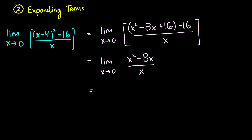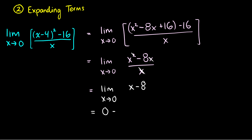Now we can cancel an x from the top and bottom — divide top and bottom by x — and we'll be left with the limit as x goes to 0 of x minus 8. If we plug 0 in for x, we'll have 0 minus 8, which is just equal to negative 8.